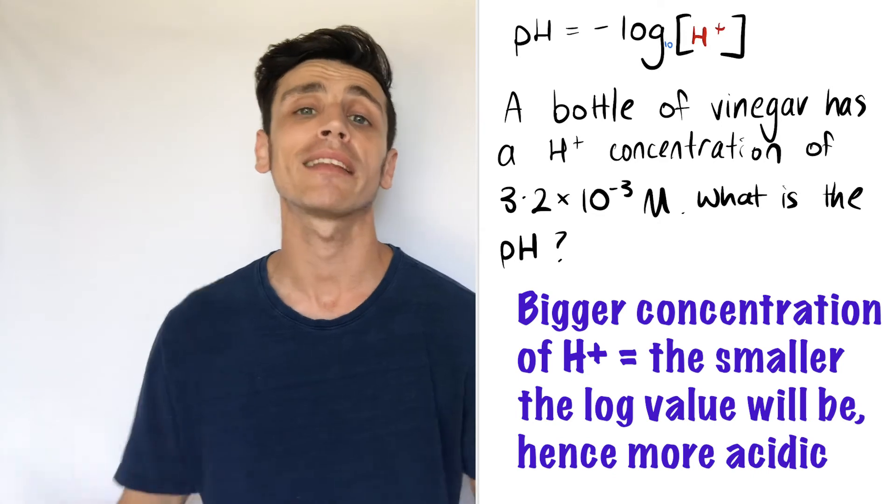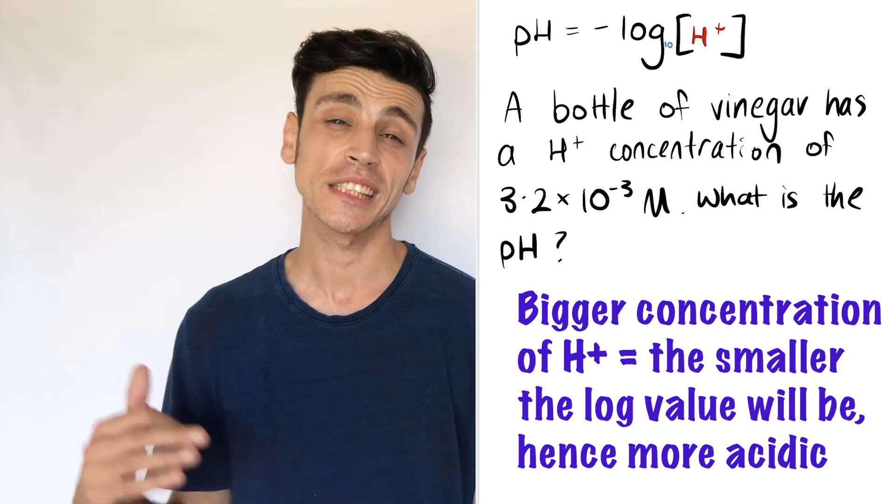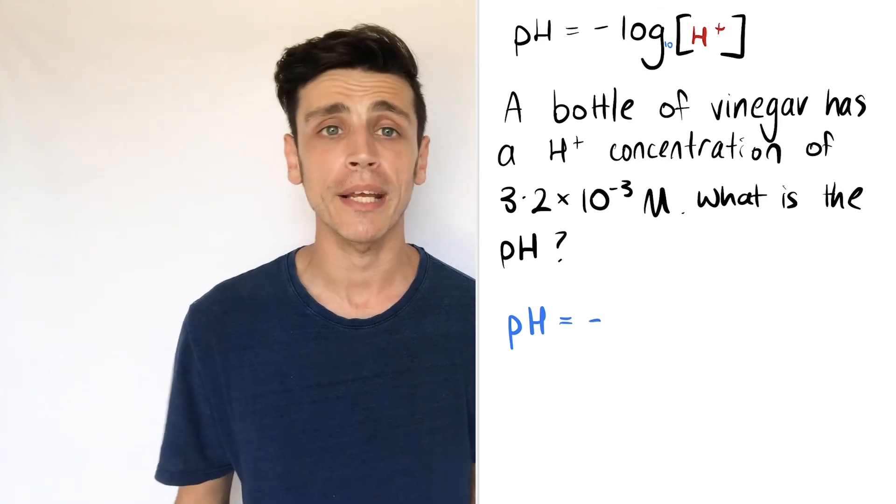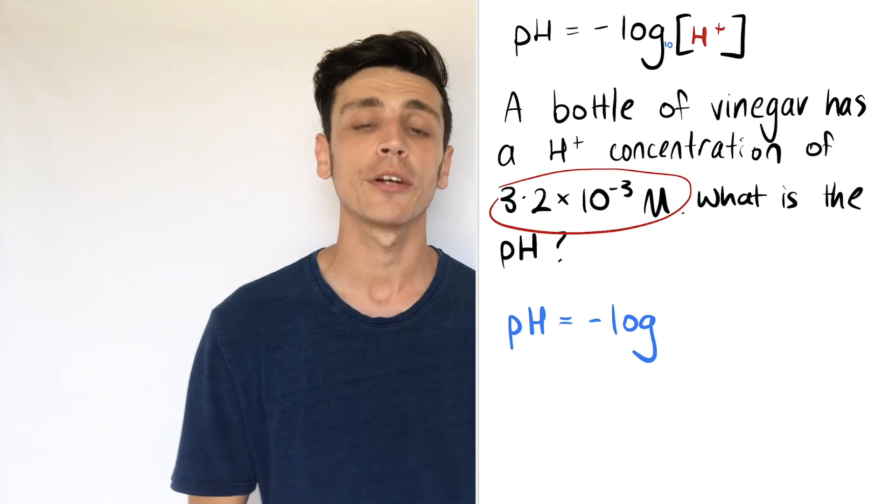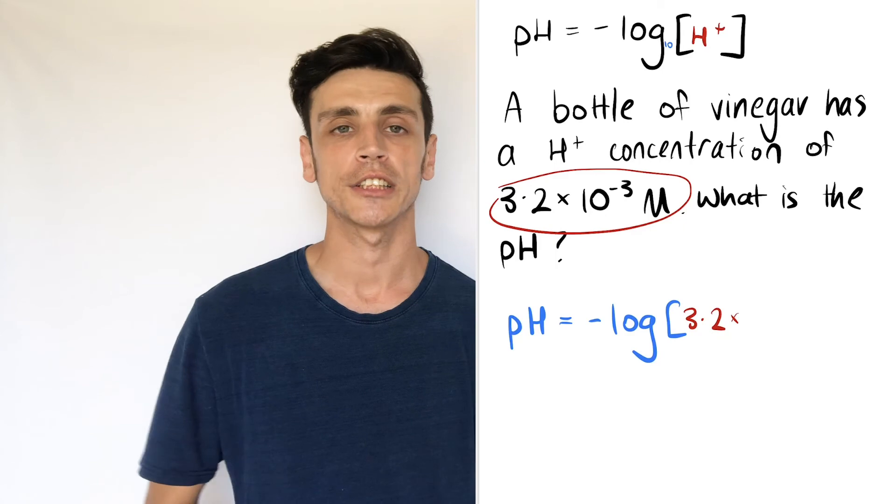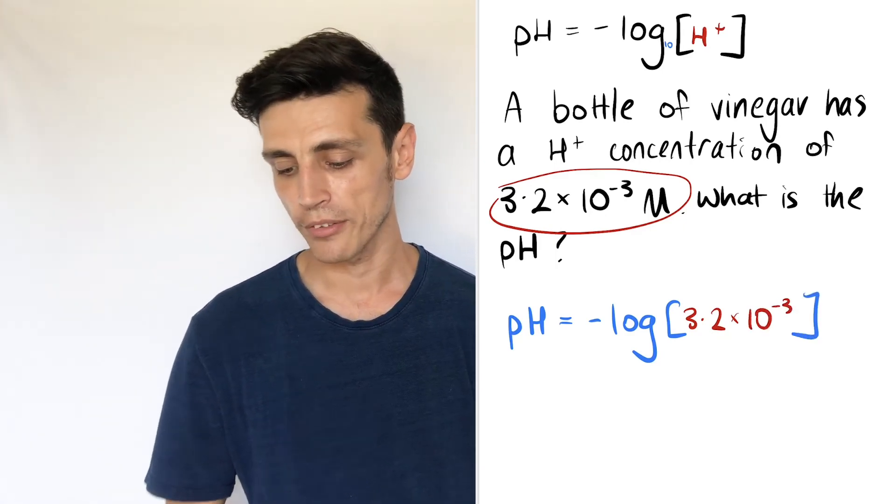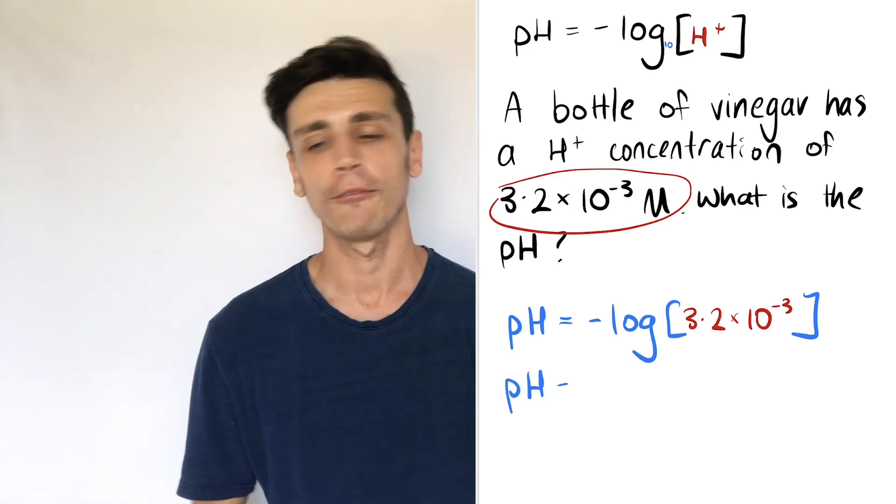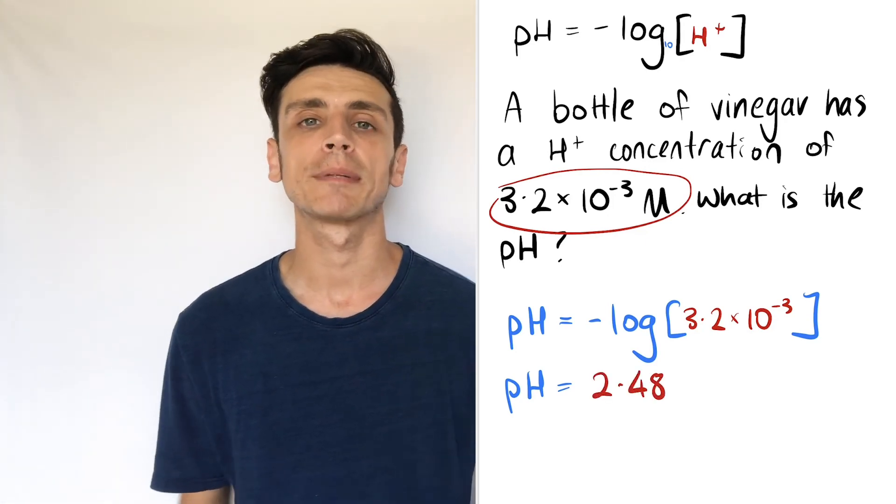And again remember I said the smaller the number, the bigger our pH is going to be. So the smaller our pH is, the bigger our concentration needs to be. Because we've got a bigger number, I'm expecting it to be below 7. So again, all we have to do is take our formula, pH equals negative log of the concentration of hydrogen atoms, and we put this into our solution: 3.2 times 10 to the negative 3. What we end up getting is 2.48, or roughly 2.5 if you want to round it up. And this makes sense because this is quite acidic.